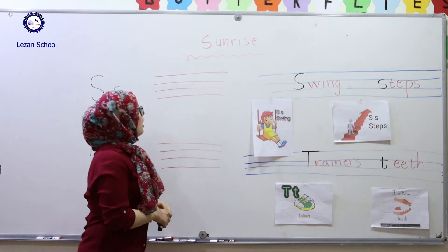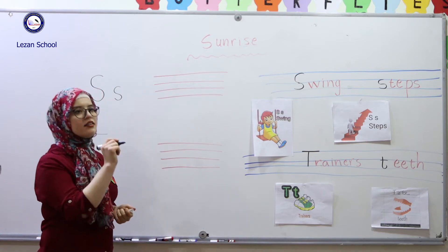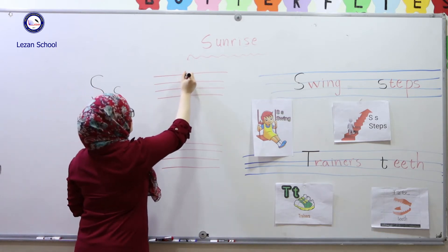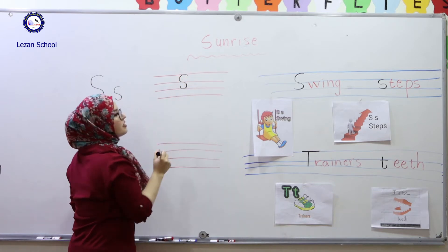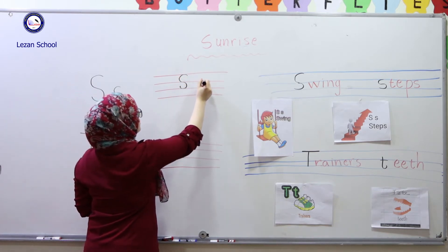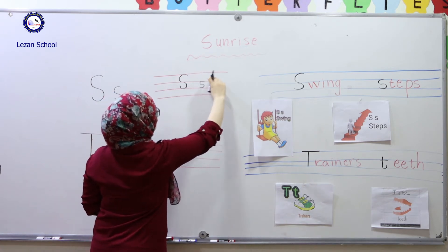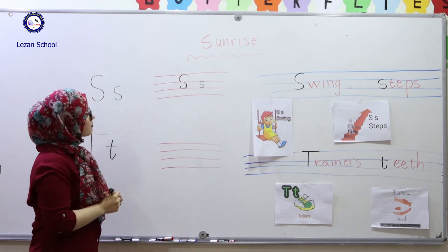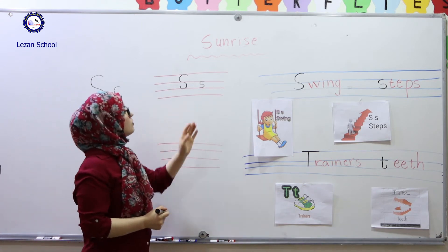Okay? How to write capital C and small C? It's just like a duck. Look, this one is capital C, and small C should be in between two lines. And that's about capital C and small C.